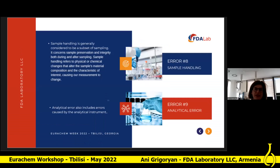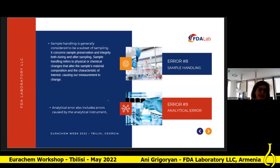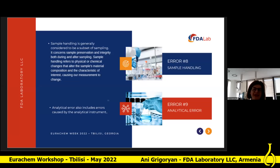Sample handling is generally considered to be the substance of sampling, concerned with preserving the integrity of the load during and after sampling. Sample handling refers to physical or chemical changes that cause the sample material's composition and characteristics to change. For example, a sample may be correctly taken on the production floor, packaged, and sent to the laboratory for analysis. However, when the lab receives the sample, it has significantly changed — the particle size distribution may have altered due to abrasion, or other changes may have occurred because the proper storage temperature was not maintained during transit.